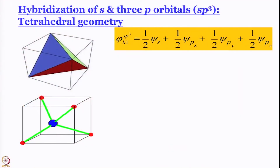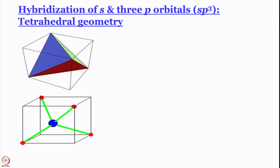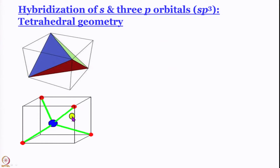Now I want to talk about sp3 hybrid orbitals. sp3 means 4 hybrid orbitals are required, for AB4 type molecules where A is the central atom, forming a tetrahedron. The angle has to be 109 degrees. A good way to visualize this: draw a cube, put dots on alternate vertices, join those dots to the center — you have your tetrahedron.